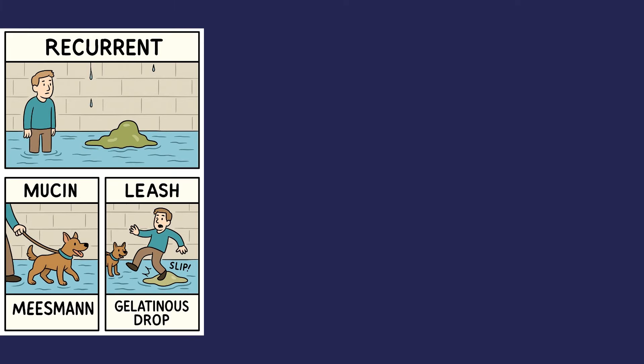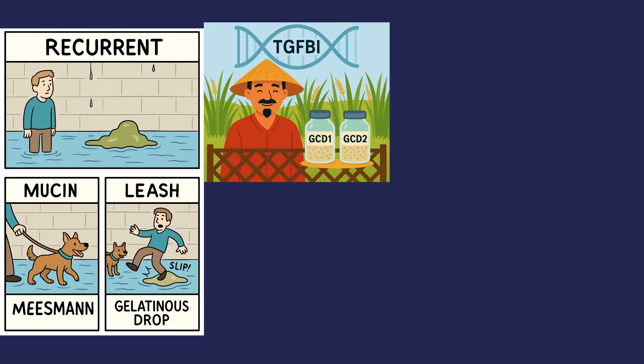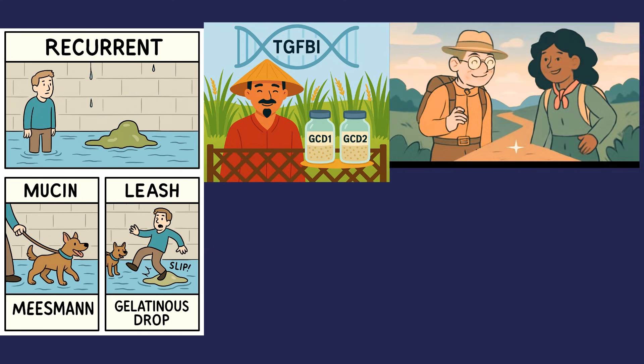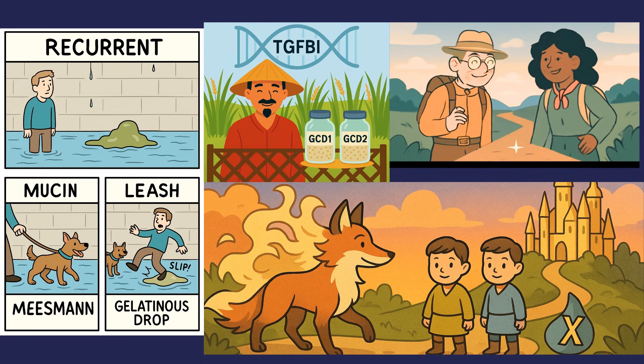Let's recap. You have learned four vivid visual stories today: epithelial-subepithelial dystrophies with Meesmann, Lisch, mucin, and jelly drop; epithelial stromal TGF-β1 dystrophies with a rice farmer from Thailand building a lattice fence with jars of granules; stromal dystrophies with Mac Schneider and his childhood friend Storma watching a fleck and amorphous clouds before dawn; and endothelial dystrophies with a shape-shifting fox and the CHED twins in the endothelial city.